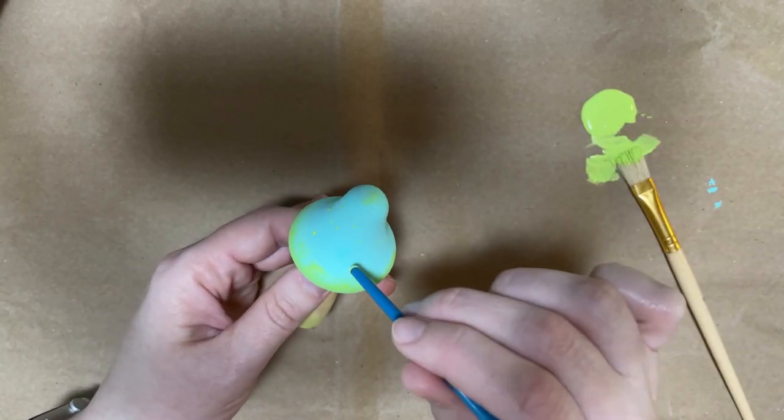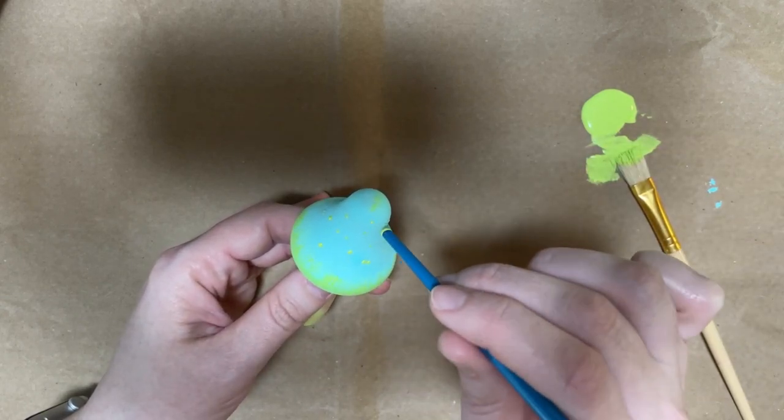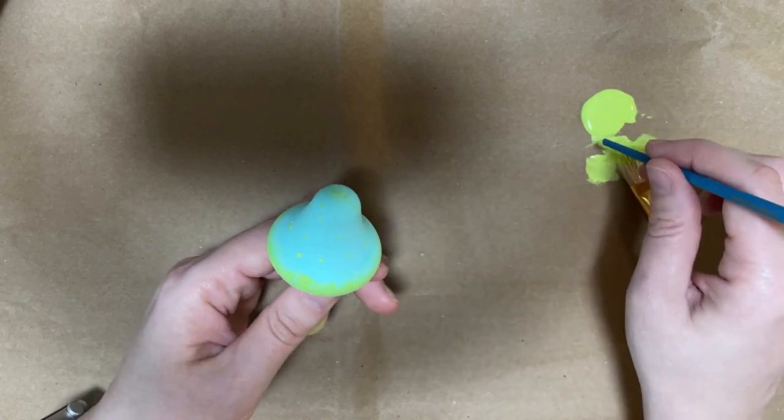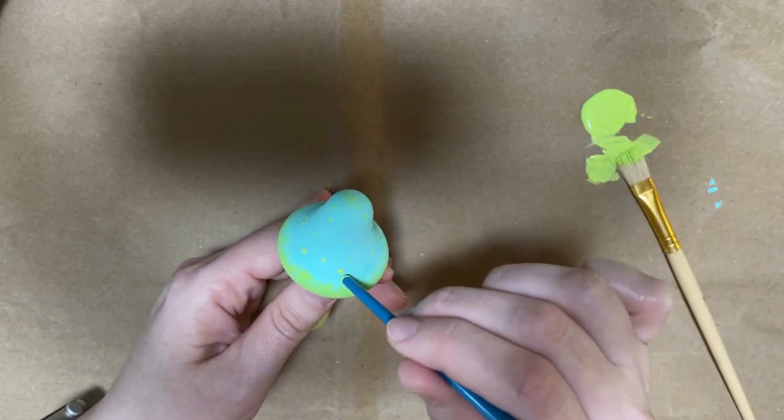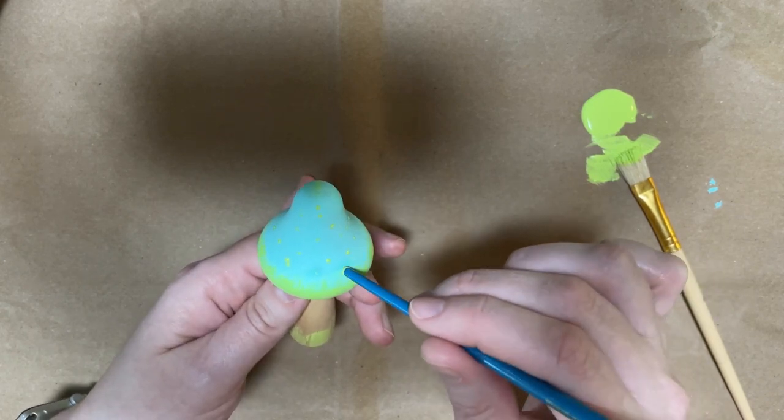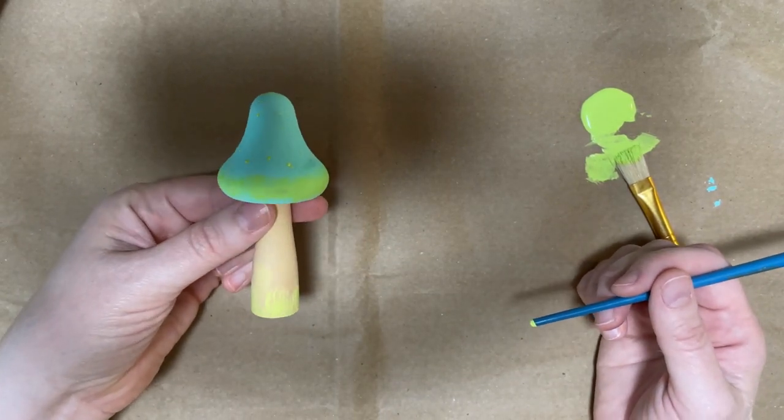If you want to add spots to your mushroom, dip the back end of a very thin paintbrush, or use a toothpick if you want something a little bit bigger. You can use a Q-tip, you can use the tip of a pencil, and you just dip it in paint, make sure there's a good amount of paint just sticking on there, and dot the top. You can do some big, some small, try to be as random as you can.